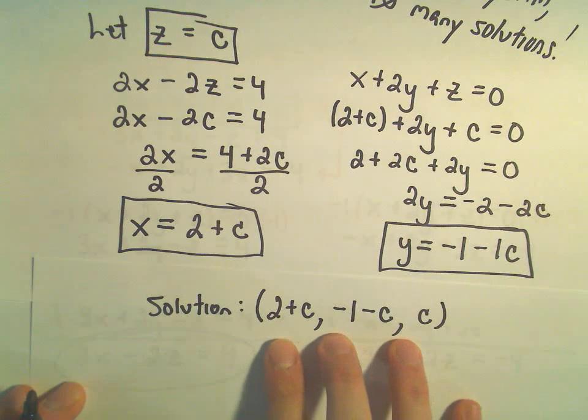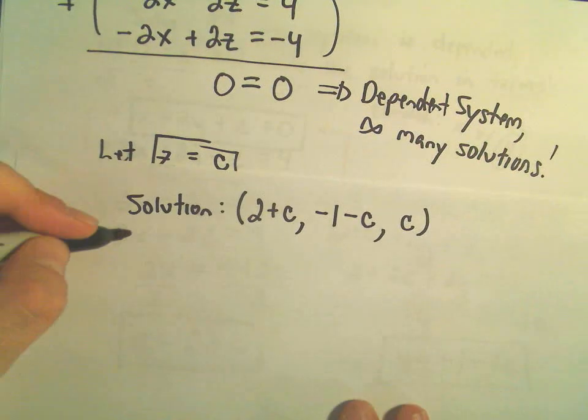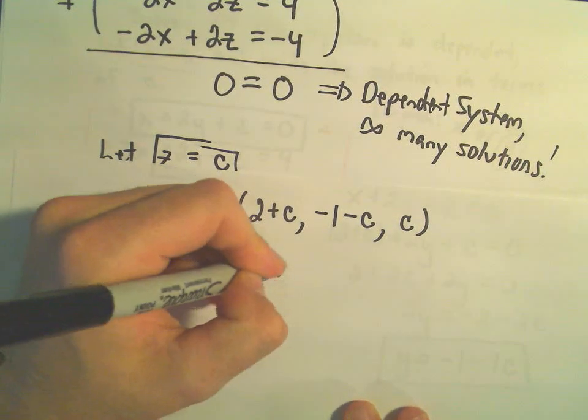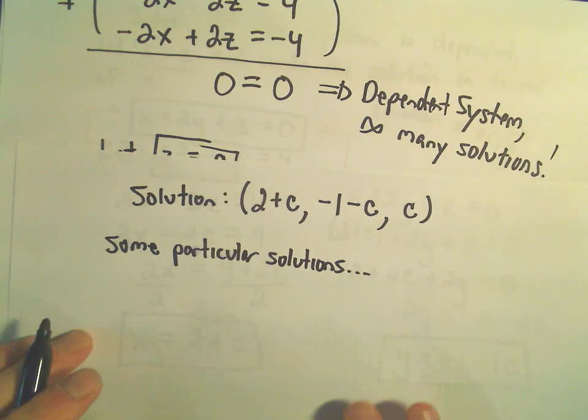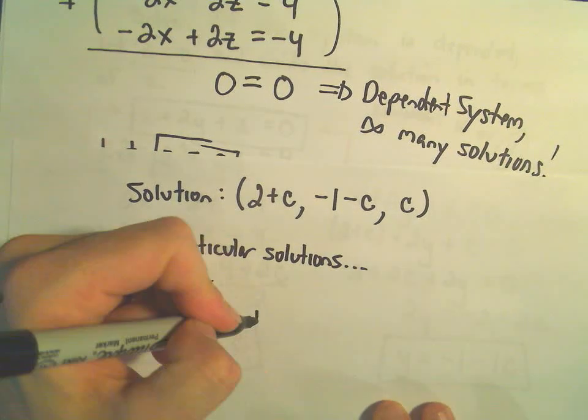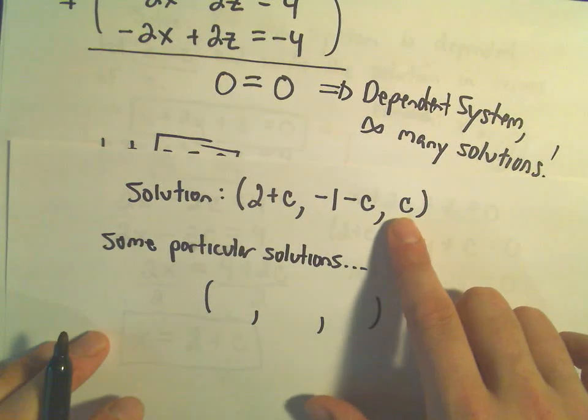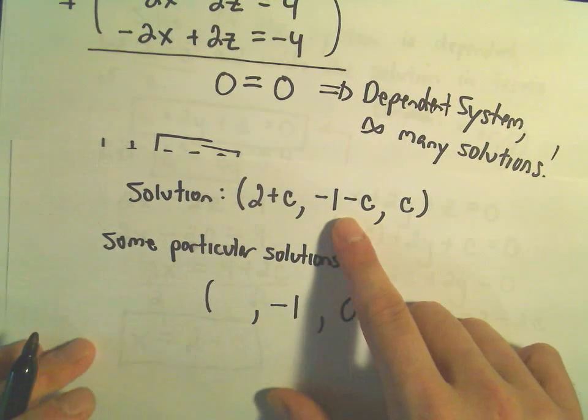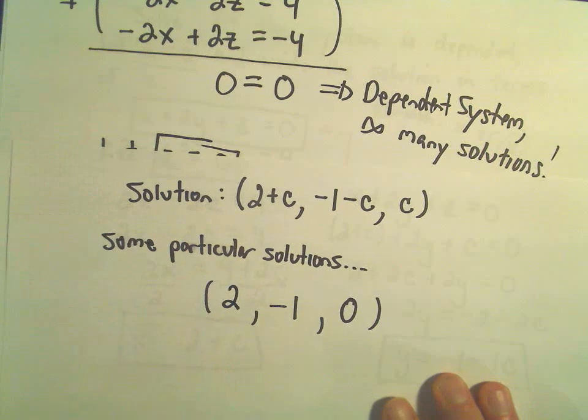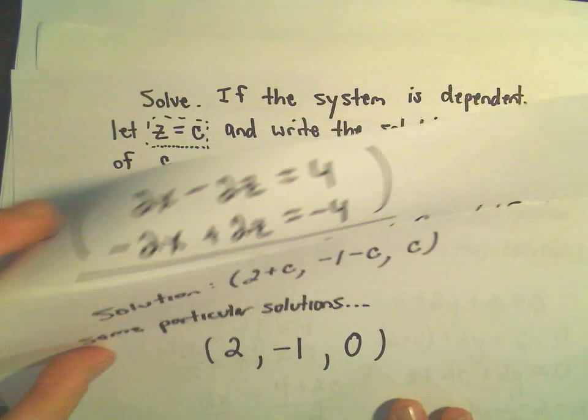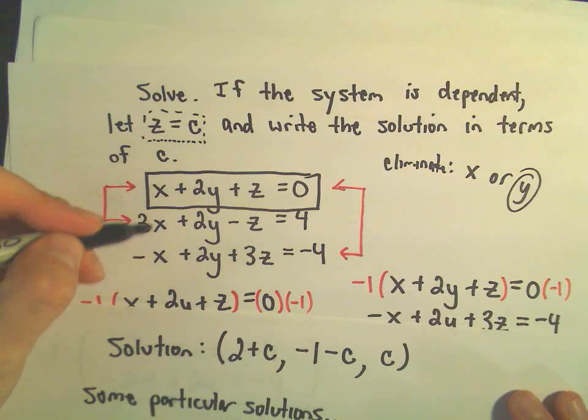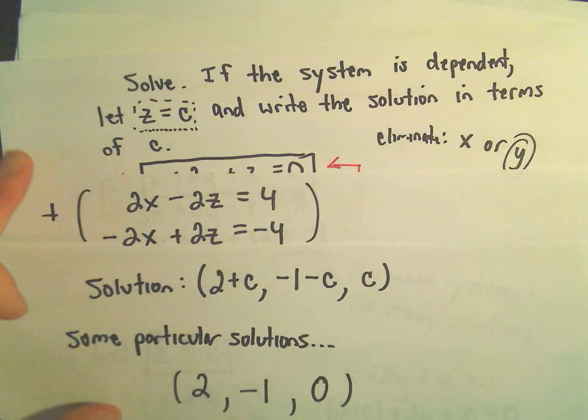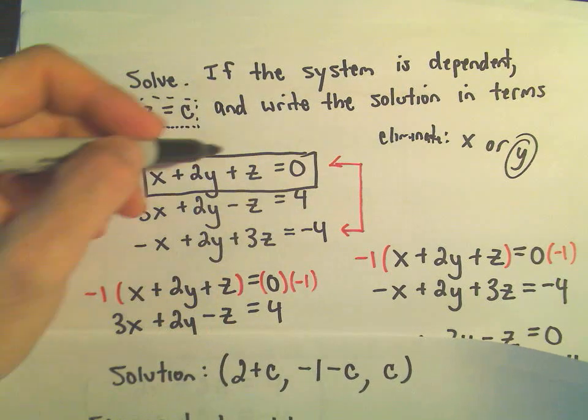And the idea is if you wanted to figure out some particular solutions. Okay, so again, we said there's infinitely many. Well, what, give me some exact solutions. Well, all you have to do is just start plugging in values for c. So, for example, if I let c equal 0, our y value would just work out to be negative 1. And our x value would just work out to be 2. So you can go back to your very, very, very original system of equations that we started with. Plug in 2 for x, negative 1 for y, and z equals 0. And you would find that that's actually a solution to this original system of equations.